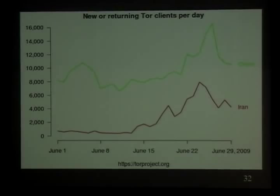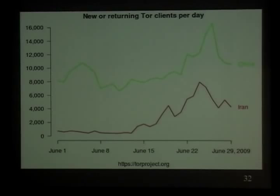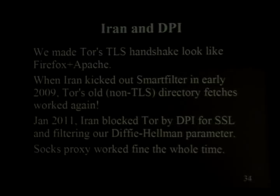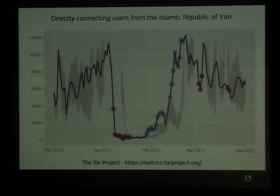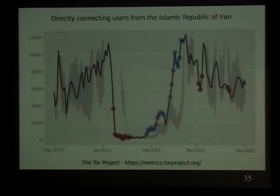There are a lot of different ways you can block TOR, and the way they did it was not at all what I was expecting. They first do deep packet inspection to look for SSL flows, then search those flows for our Diffie-Hellman parameter P and block those flows. That was not what I expected for their first attempt at blocking TOR. It worked for a week or so in January. Here's a graph of users connecting to the TOR network over time in January — we can clearly see the blocking event.